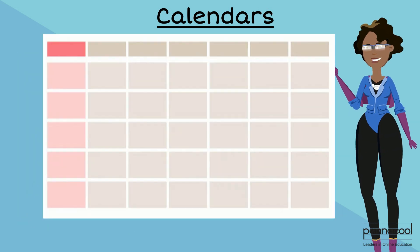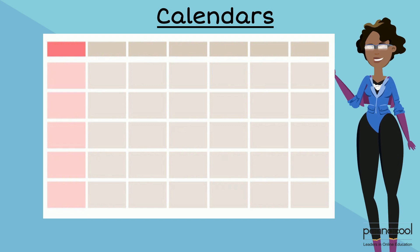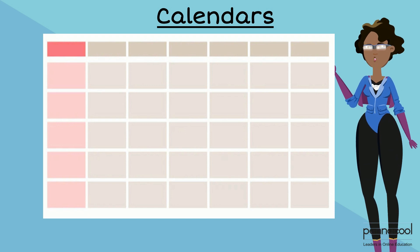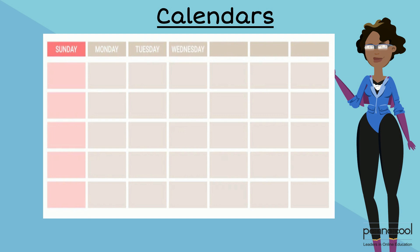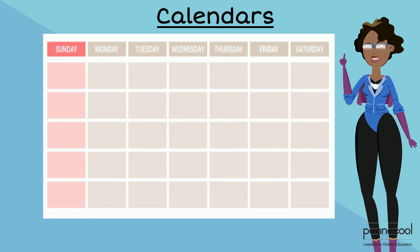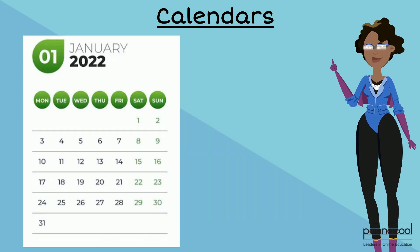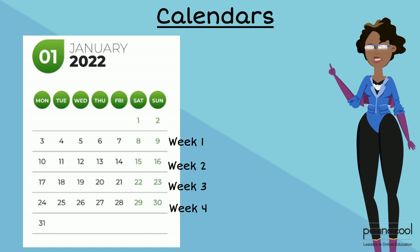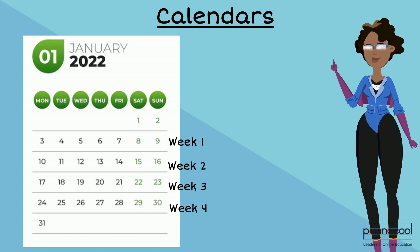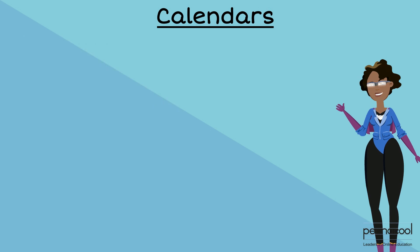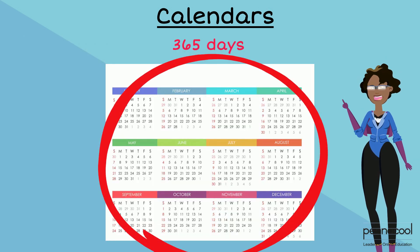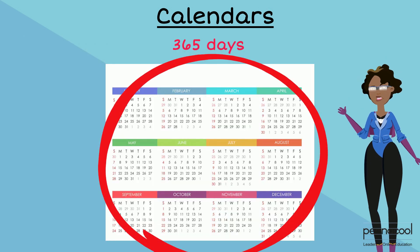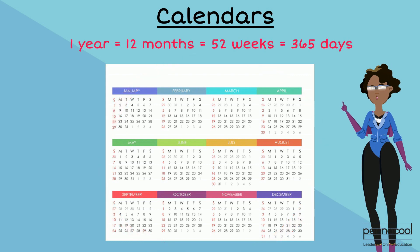Each week in a calendar has 7 days: Sunday, Monday, Tuesday, Wednesday, Thursday, Friday and Saturday. Each month has approximately 4 of these weeks. All of the months in a year make up 365 days, which is also the same as 52 weeks.